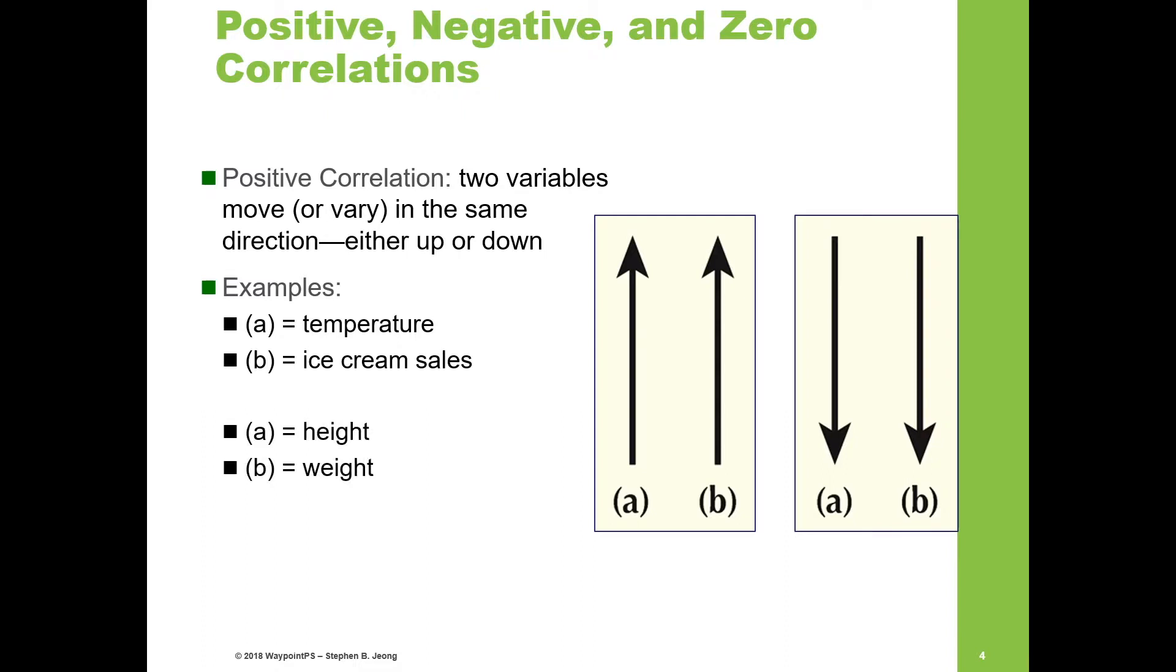Height and weight—we also find that taller people tend to weigh more, so we would expect a positive correlation. As height goes down, weight also goes down. Essentially, if there's a positive correlation, the variables are moving either up or down at the same time.